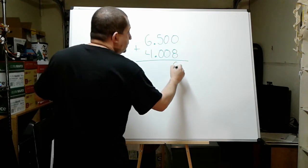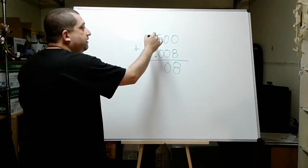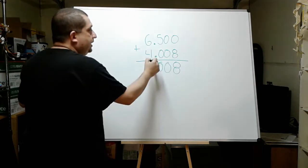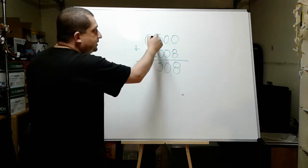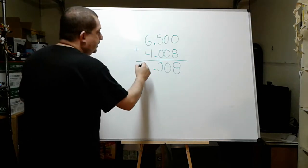So zero plus eight equals eight. And zero plus zero equals zero. Five plus zero equals five. There is my decimal period. Whoop! There it is. I'm going to go ahead and move it down. And then six plus four equals ten.